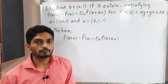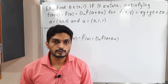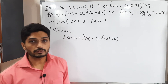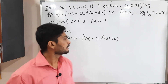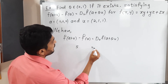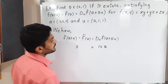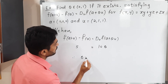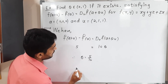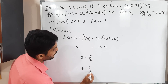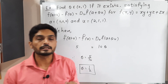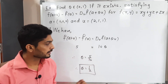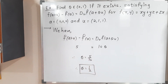Now we equate left-hand side and right-hand side. Left-hand side = 5 and right-hand side = 10θ. Therefore θ = 5/10 = 1/2. This value θ = 1/2 lies in the open interval (0, 1), which is the required value of θ.